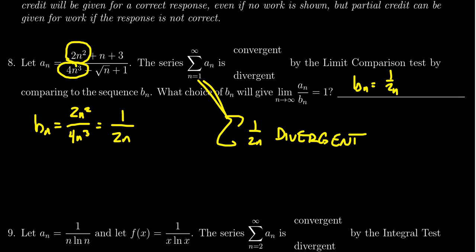And so since these two series will have the same convergence, this series likewise will be divergent by the limit comparison test.